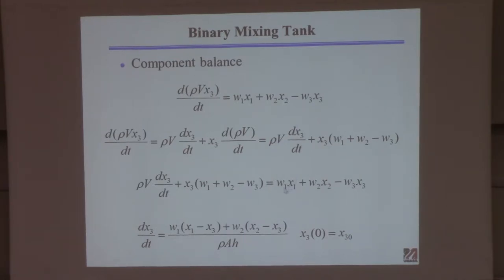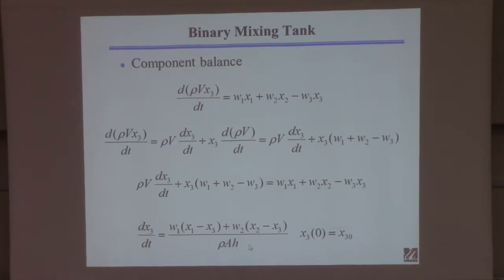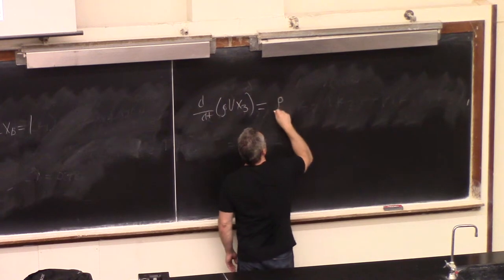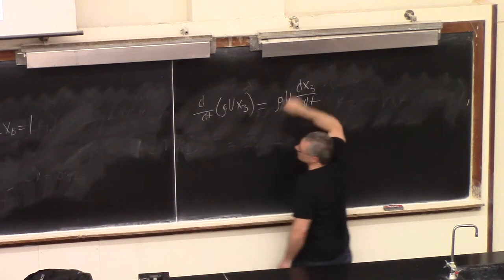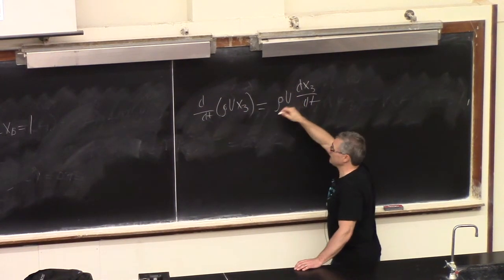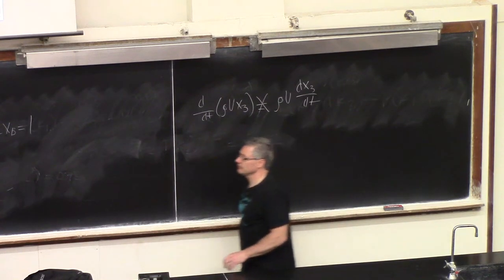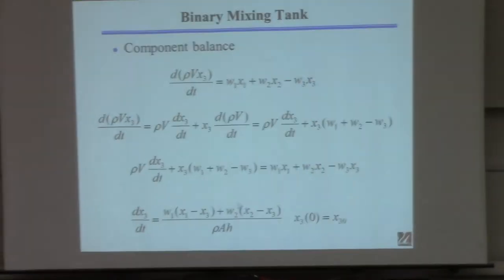After substitution, some terms cancel: the minus W3*X3 terms cancel on both sides. Gathering terms involving W1 gives W1*(X1 - X3), and similarly for W2. Writing V as A*H and dividing through gives the final equation for dX3/dt. What you must never do for a problem like this is pull rho*V out of the derivative as a constant, because V is a function of time since H changes with time from the mass balance. You must use the product rule and substitute in the mass balance.